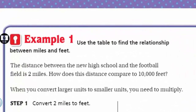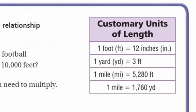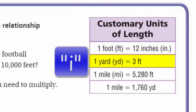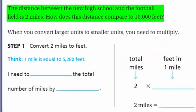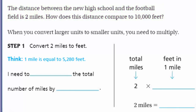Now example one: use the table to find the relationship between miles and feet. The customary units of length table shows: one foot equals 12 inches; one yard equals three feet; one mile equals 5,280 feet; one mile also equals 1,760 yards. The problem states: the distance between the new high school and the football field is 2 miles. How does this distance compare to 10,000 feet?